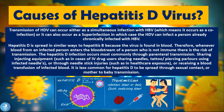Transmission of HDV can occur either as a simultaneous infection with HBV — called a co-infection — or as a super-infection, where HDV infects a person already chronically infected with hepatitis B. A co-infection means both hepatitis B and D are contracted at the same time for the first time, whereas a super-infection means chronic hepatitis B is followed by contracting a hepatitis D infection.